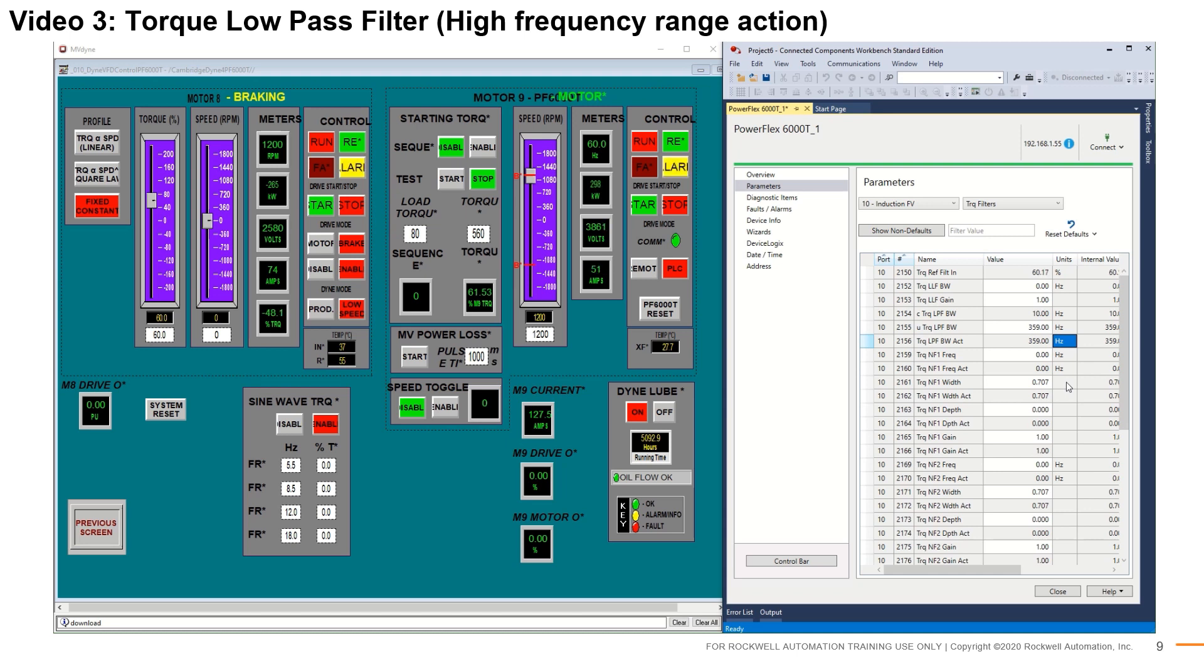Observe that with adaptive tuning turned off, all the torque reference filters are again set to their original configurations. Note parameter number 2156, the actual torque low-pass filter bandwidth, which now sits at 359 hertz. When the feature is enabled, the low-pass filter starts to detune and stops when the filter bandwidth matches the offending high-frequency component's value. Observe that when the high-frequency component is detected by adaptive tuning, the torque low-pass filter bandwidth decreases from the original 359 hertz to 20.2 hertz.